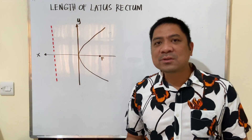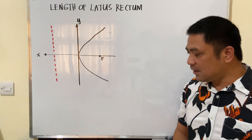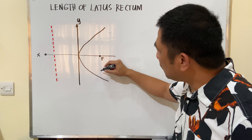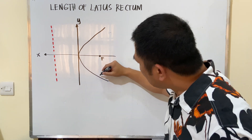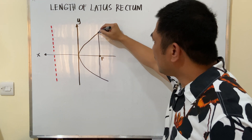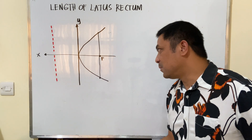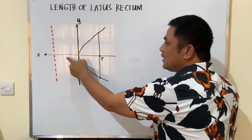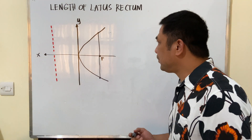As per definition, latus rectum is that segment passing through the focus and perpendicular to the axis of symmetry. So if I draw a line that passes through the focus and is perpendicular to the axis of symmetry — from this point to this point — that is the length of the latus rectum.